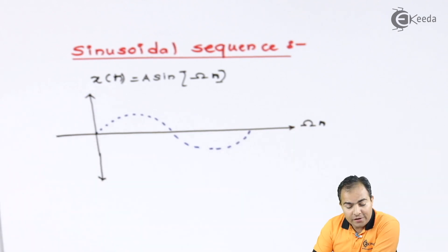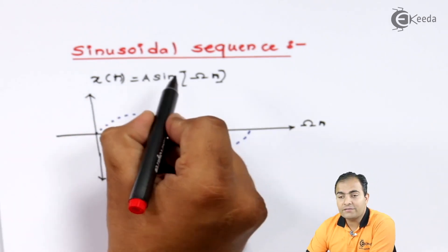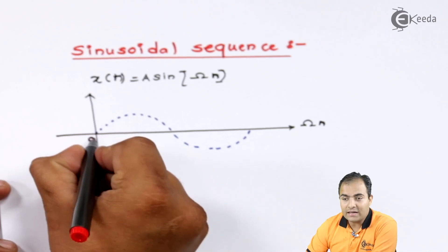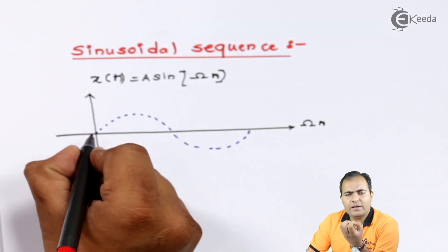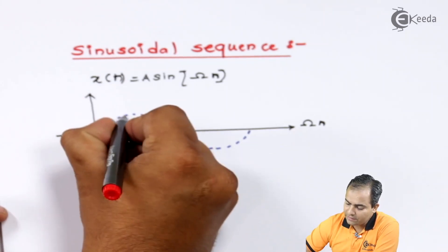Now, as this graph is discrete, it means the samples are available only for a particular period of time. So let's say these are the samples.